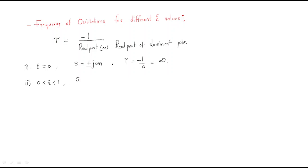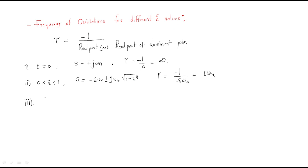Second, for zero less than zeta less than one, we have two poles: minus zeta omega n plus or minus j omega n times the square root of 1 minus zeta squared. Here tau equals minus 1 divided by minus zeta omega n, so the time constant is 1 divided by zeta omega n.